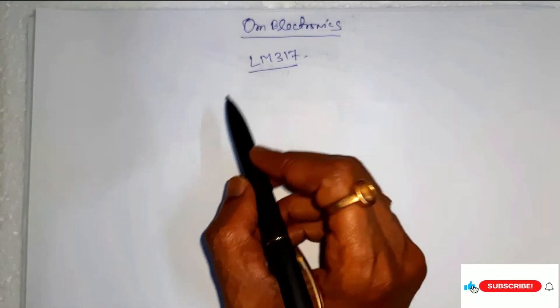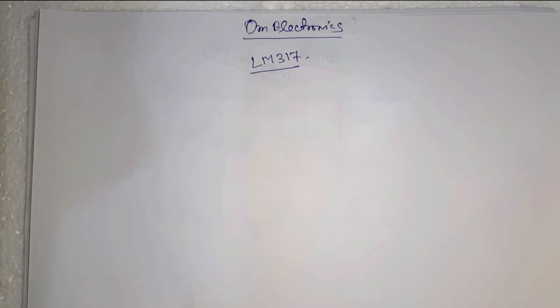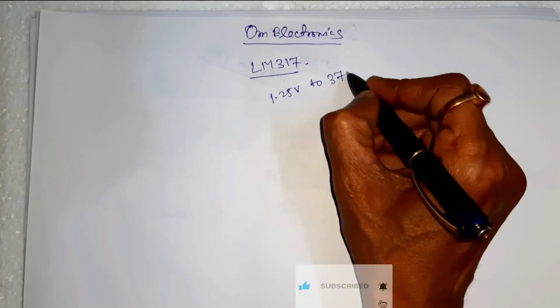The LM317 is a fully adjustable 3-terminal positive voltage regulator capable of supplying 1.5 amperes with an output voltage ranging from 1.25 volt to 37 volt.